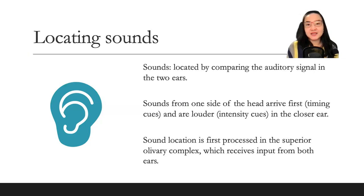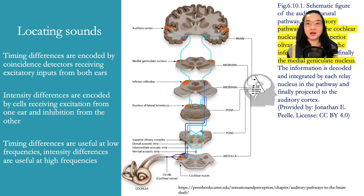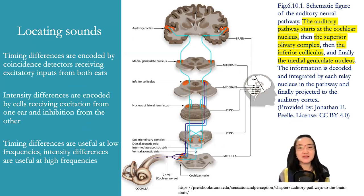Locating sounds. Sounds are located by comparing the auditory signal in the two ears. Sounds from one side of the head arrive first — timing cues — and are louder — intensity cues — in the closer ear. Sound location is first processed in the superior olivary complex, which receives input from both ears. Timing differences are encoded by coincidence detectors receiving excitatory inputs from both ears. Intensity differences are encoded by cells receiving excitation from one ear and inhibition from the other. Timing differences are useful at low frequencies; intensity differences are useful at higher frequencies.